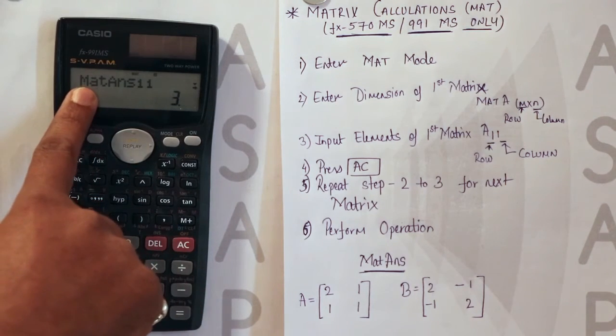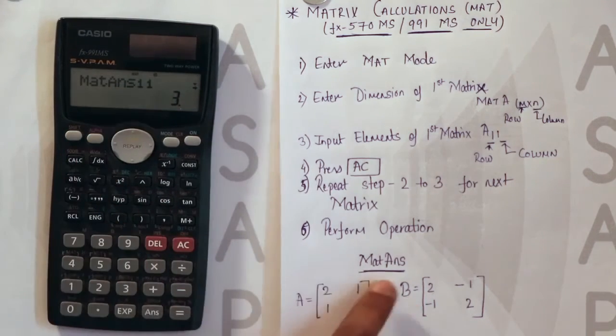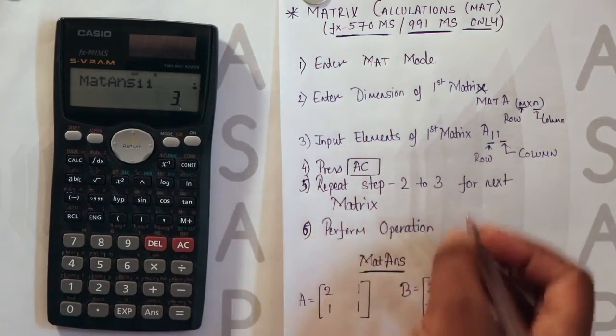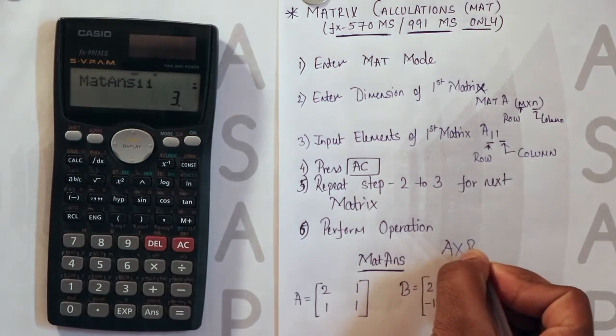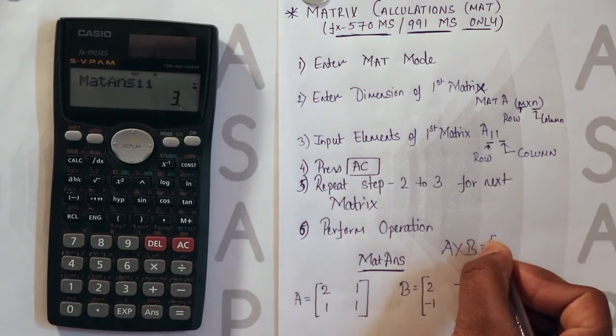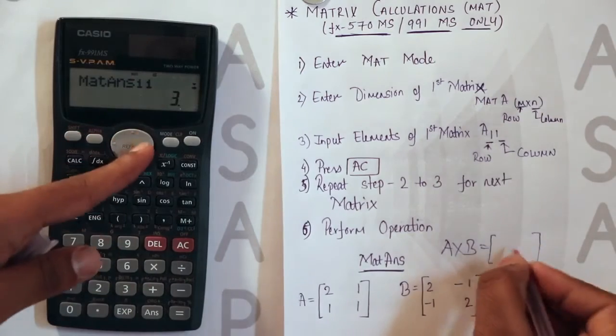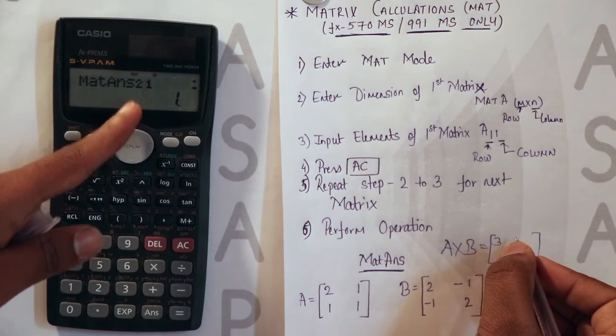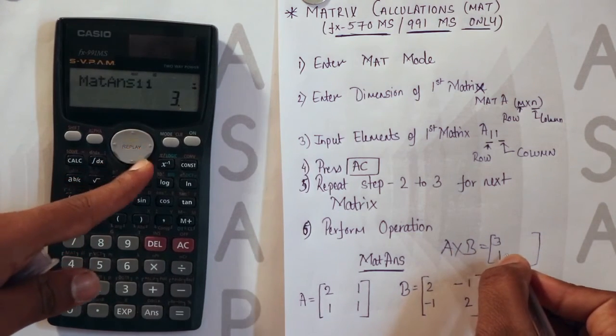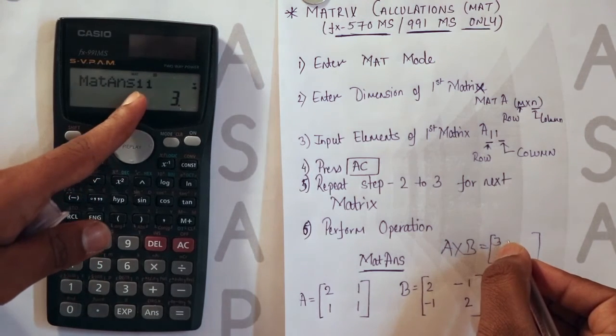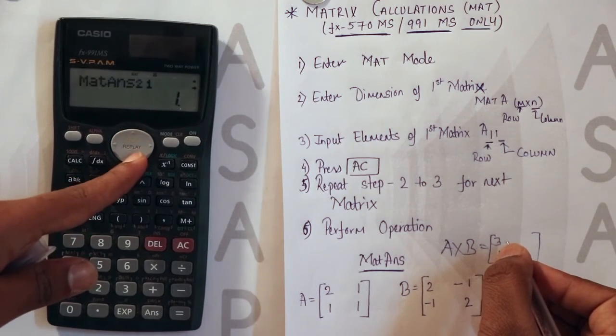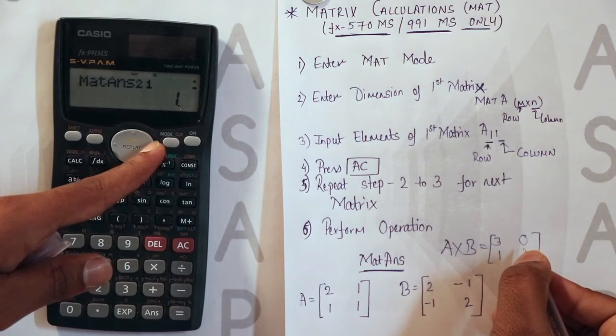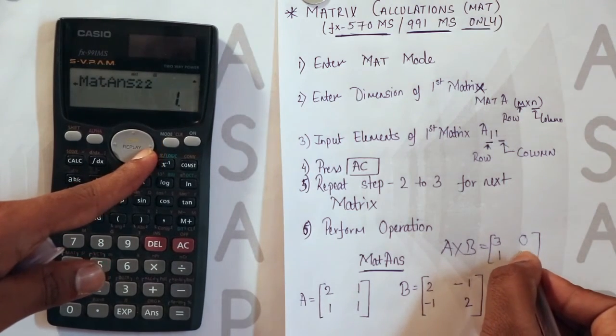Now you can see matrix answer 1 1. Mat answer. Which will show you the final result. So when you are performing matrix A into matrix B. This is the result you will be getting. A 1 1 that is 3. A 2 1 that is 1. A 1 1 3. A 2 1. A 1 2 which is 0. And A 2 2 which is 1.